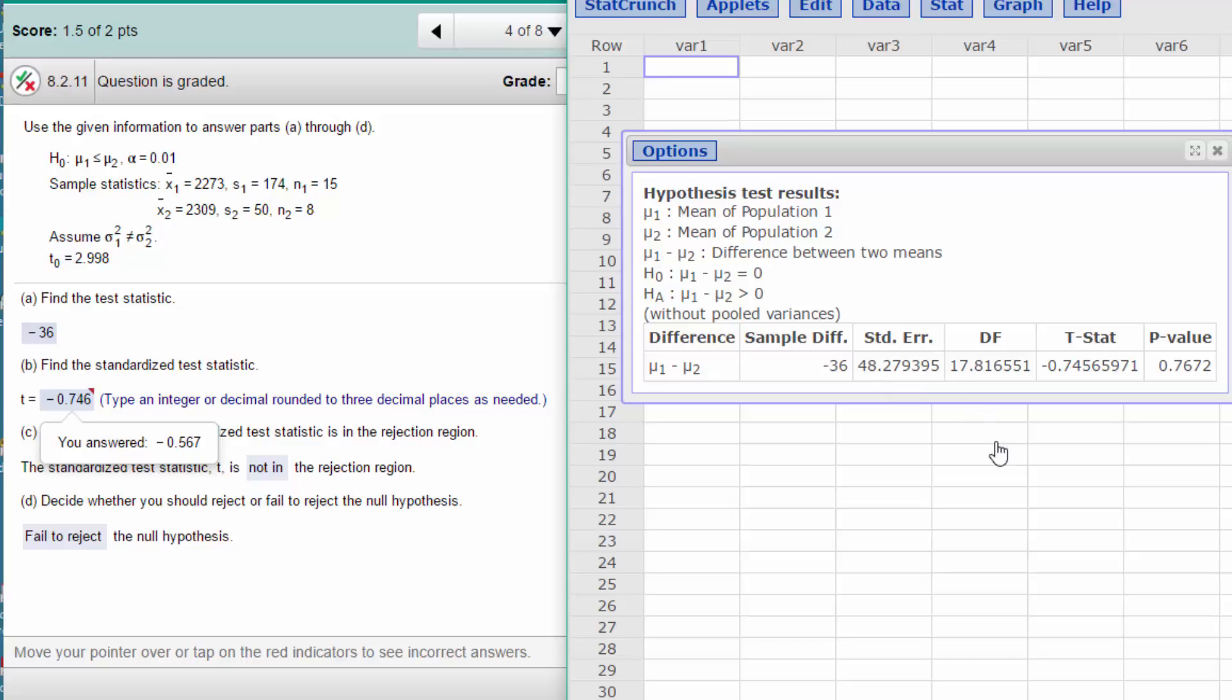We also get, because we ran this test, a p-value of 0.762. Now our alpha is 0.01, and 0.762 is much, much larger than 0.01, so that tells us we fail to reject the null hypothesis.